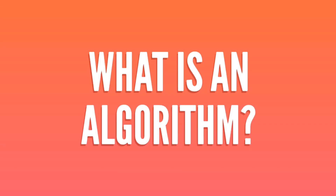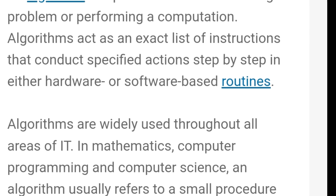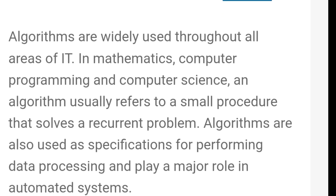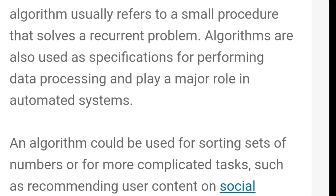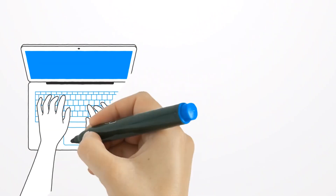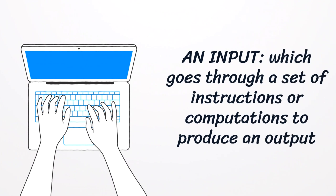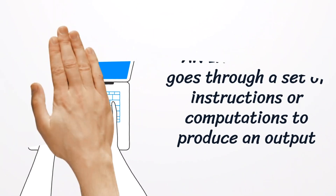What is an algorithm? An algorithm is a step-by-step process adopted in solving a problem or performing a computation. Like the optimization we discussed earlier, an algorithm is basically made up of three parts: an input which goes through a set of instructions or computations to produce an output. The goal of any algorithm is to always provide a well-defined output after moving an input through a well-defined set of steps.